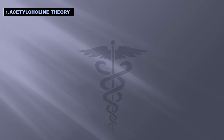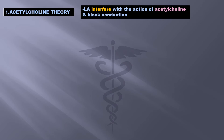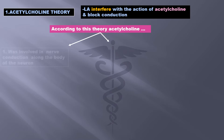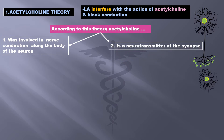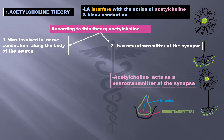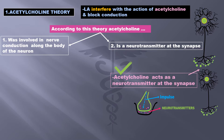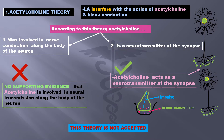The acetylcholine theory says that local anesthetics interfere with the action of acetylcholine and block conduction. According to this theory, acetylcholine was involved in nerve conduction along the body of the neuron, and it is a neurotransmitter at the synapse. We do know that acetylcholine acts as a neurotransmitter at the synapse, but there is no supporting evidence that acetylcholine is involved in neural transmission along the body of the neuron. So, this theory is not accepted.